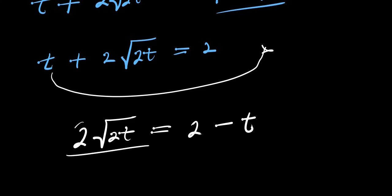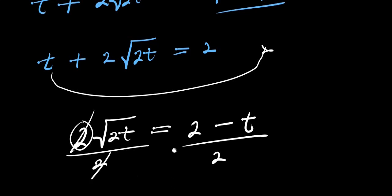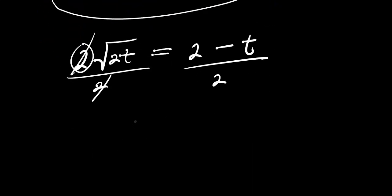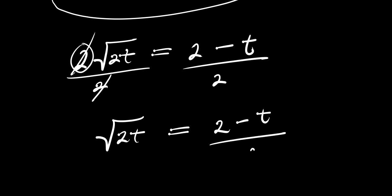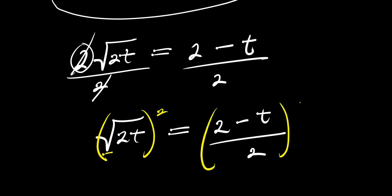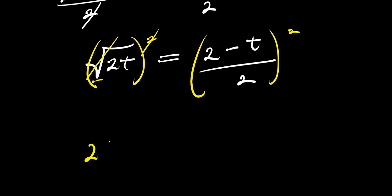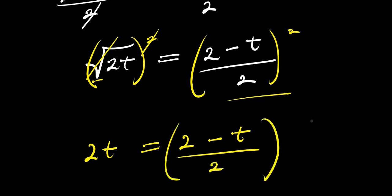Dividing both sides by 2, the 2 cancels, so we get root 2t equals 2 minus t divided by 2. Now I want to eliminate the square root, so I square both parts of the equation. This gives 2t equals the quantity 2 minus t divided by 2, times 2 minus t divided by 2.